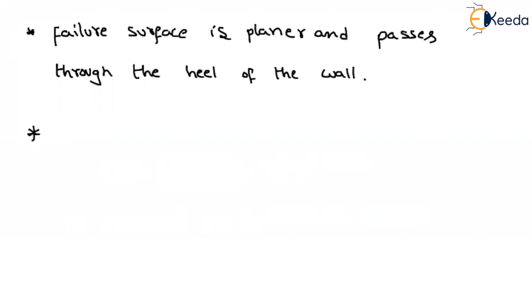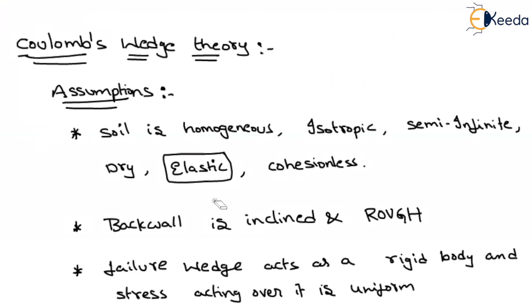The point of application and line of action of the resultant thrust between the wall and soil is known. The most important points are: the soil mass is under elastic condition, it is applicable for cohesionless soils, the back wall is inclined and rough, the failure wedge is considered as a rigid body, and the stress acting over it is uniform.